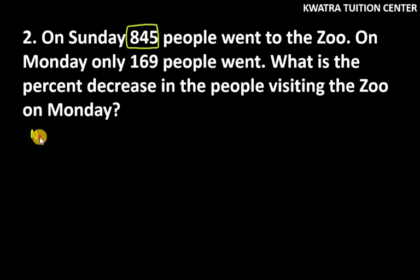So first of all, we will see the change in the zoo. Number of people decreased is equal to number of people who went on Sunday, Sunday 845, and Monday 169. So this will be 676.